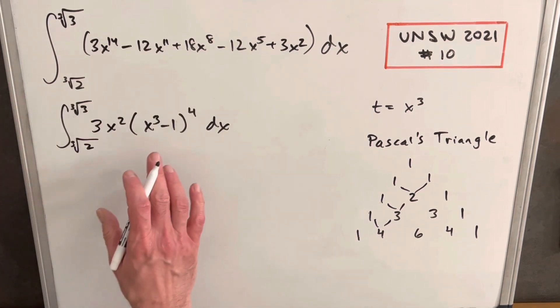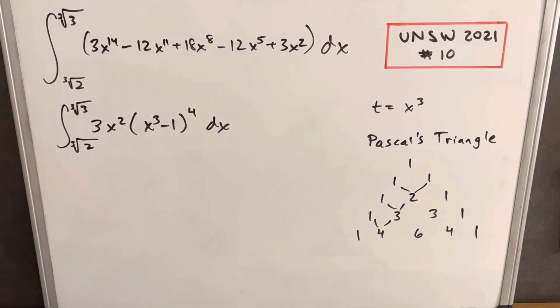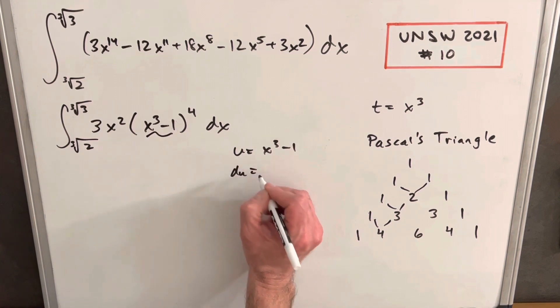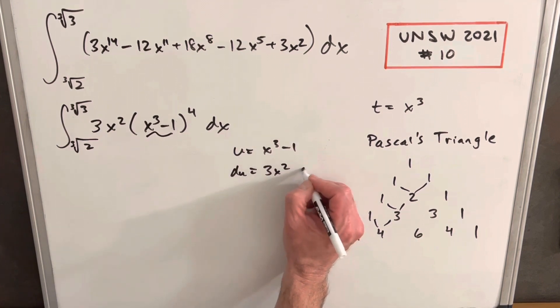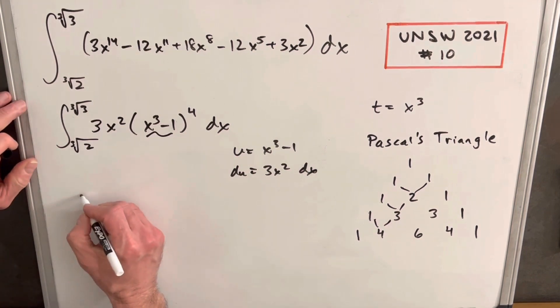And now we're back to our integral, but what we can do, instead of having to do the power rule 5 times, which is just a little tedious, now we can actually do a u substitution because we just have these two terms. So I'm going to say u equals x cubed minus 1, and then du is 3x squared dx. We have that right here. So then we'll do the substitution, but first we need to update our bounds.